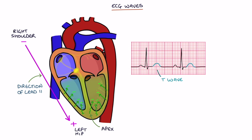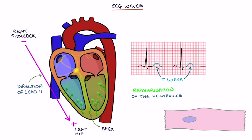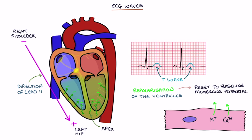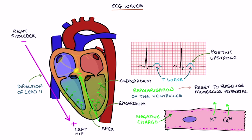The T wave represents the repolarization of the ventricles. Repolarization is where ions are moved across the cell membrane to reset the cells back to their baseline membrane potential. This involves a negative charge spreading from the outside — the epicardium — towards the inside — the endocardium — of the ventricles, in the opposite direction of lead 2. As this is a negative charge spreading in the opposite direction of lead 2, it creates a positive upstroke on the ECG trace.